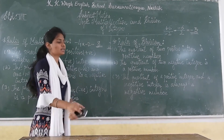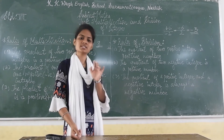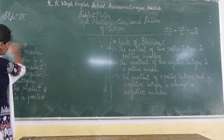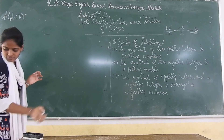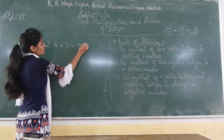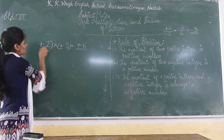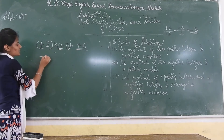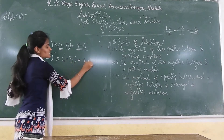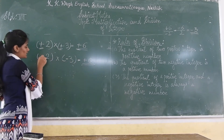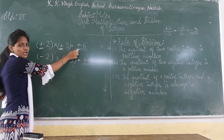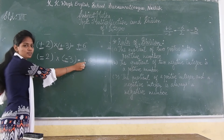In short, we can say that if numbers are having the same sign, the answer will be positive. For example, plus 2 into plus 3 gives a positive answer, that is 6. Similarly, minus 2 into minus 3 also gives a positive answer of 6, that is plus 6. Negative into negative gives a positive answer. Same sign means positive answer.